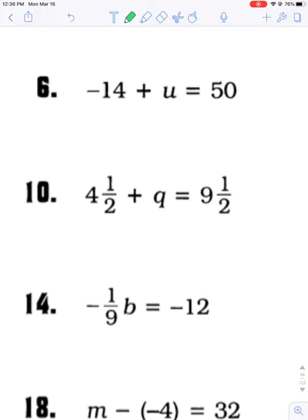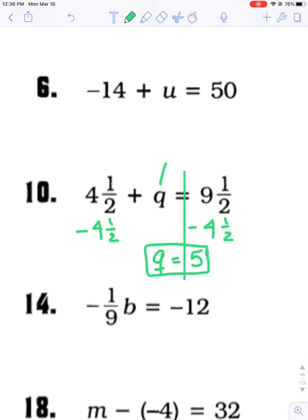You think about which number is bothering king variable, and that's 4 and a half. So I need to subtract 4 and a half from both sides. On the left-hand side, I get Q equals. And on the right-hand side, I actually already have common denominators. 1 half minus 1 half goes away. 9 minus 4 is 5. If you want to check it really quick in your head, just imagine you're putting a 5 right there. 4 and a half plus 5, that's 9 and a half. You don't even have to really write anything out.